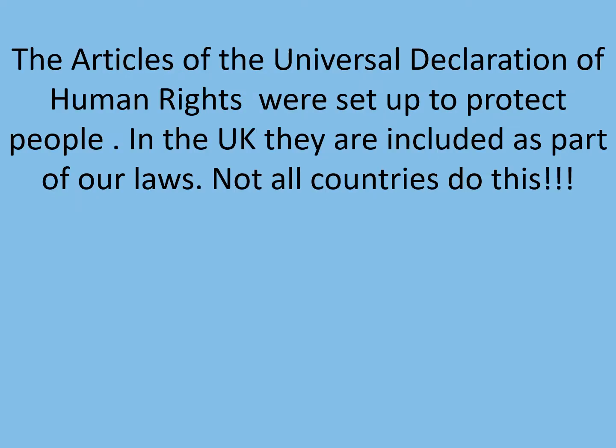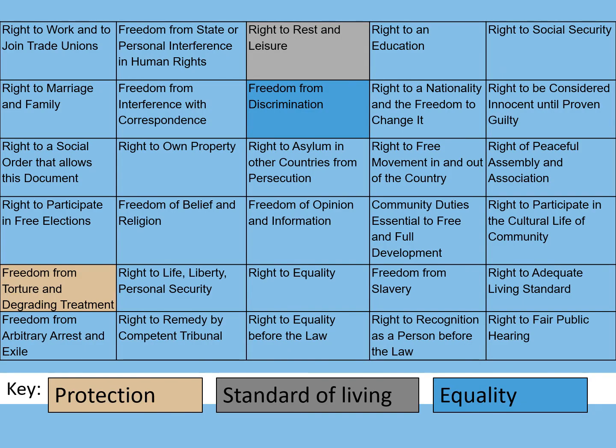Human rights are set up to protect all people. We've put them into our laws in the UK, but a lot of countries don't actually do that. These are the human rights that everybody in the world is entitled to. If you press pause, you can code each one: the rights that are about protecting people, the rights that are about guaranteeing a standard of living, and the rights about equality. An example of each has been done for you — have a go at doing the rest.